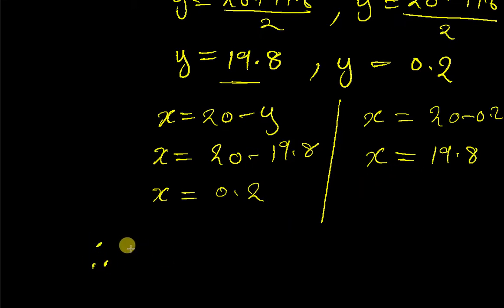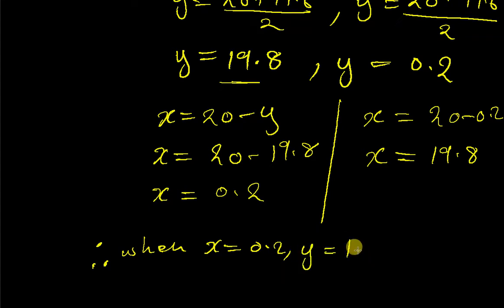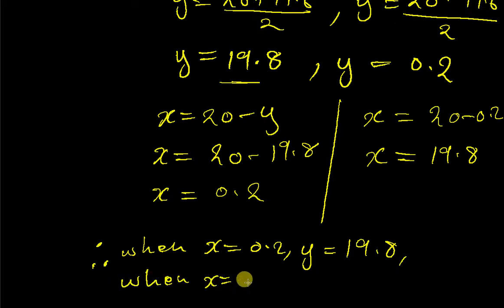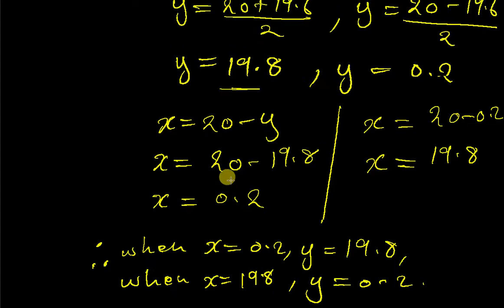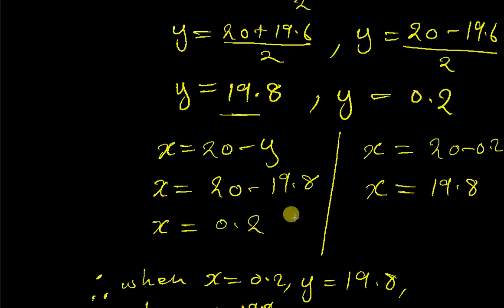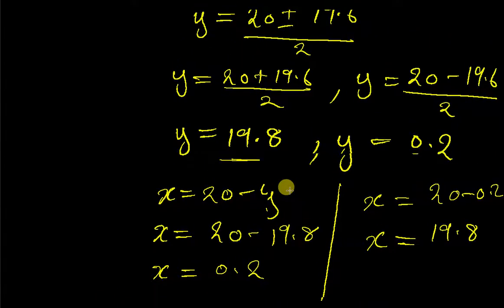Therefore, when x = 0.2, y = 19.8, and when x = 19.8, y = 0.2. These are the solutions. Thank you for watching today's tutorial. Make sure you subscribe to the channel so you don't miss upcoming videos. My name is Hamted Shalom.